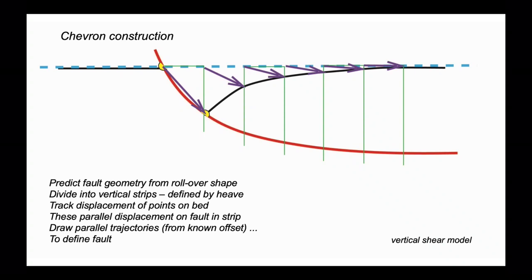We could work this backwards because if we knew the shape of the fault, we could also work out by reversing the method the shape of the rollover anticline. This means we can add other beds into our cross section.